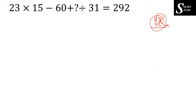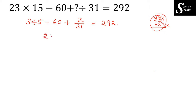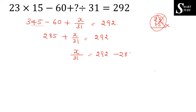So for 23 into 15, take 23 as 20 plus 3. Then 15 into 20 is 300, and 15 into 3 is 45. So 300 plus 45 is 345. Then 345 minus 60 is 285. So plus x divided by 31 equals 292, meaning 292 minus 285 equals 7.